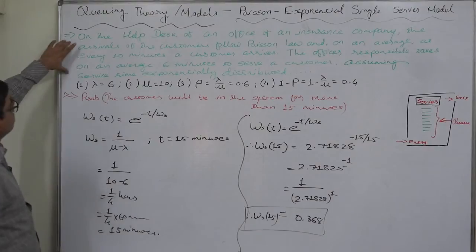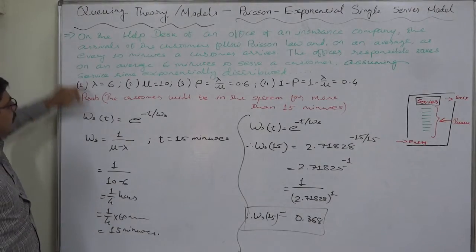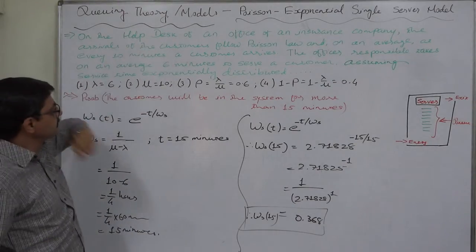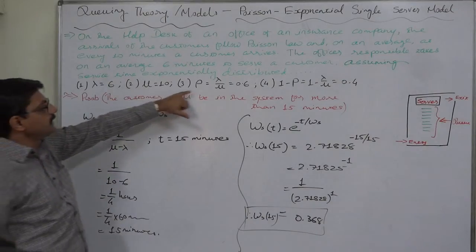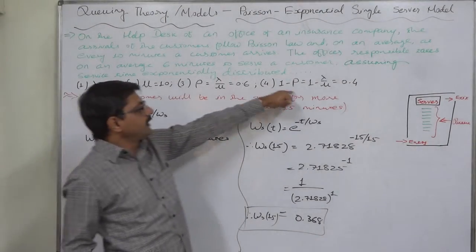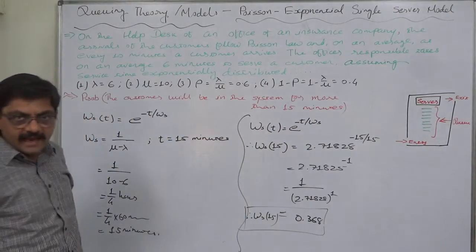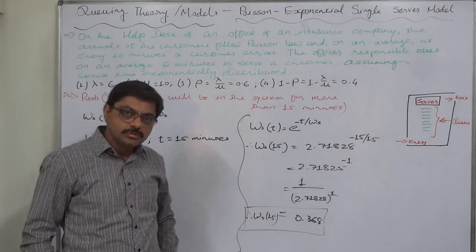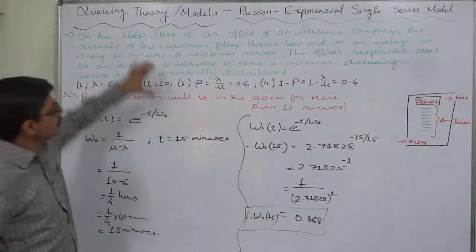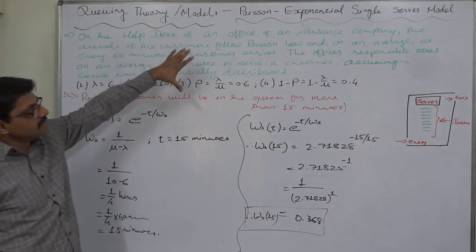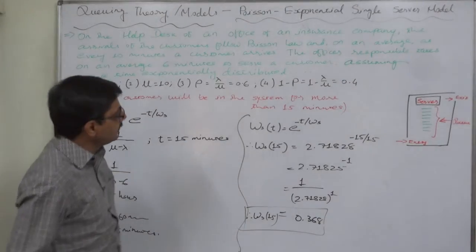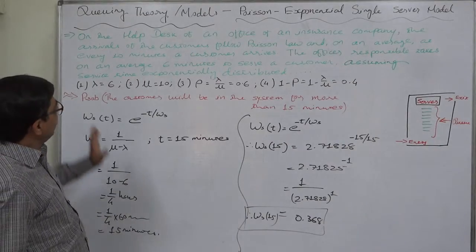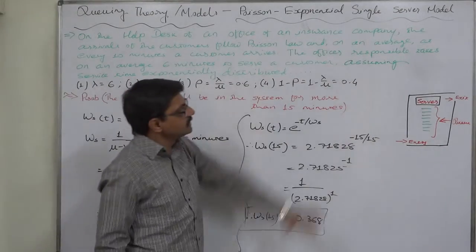In the last series of few lectures we studied this case, and we started how to find out arrival rate. That was our first topic with this case. And then we found service rate, utilization rate, idle rate, probability of n customers in the system, and various many things. I suggest you to go through all the lectures based on this case so that you can easily understand almost all the calculations in case of Poisson exponential single server model.